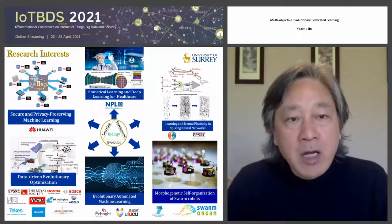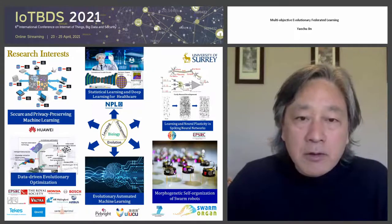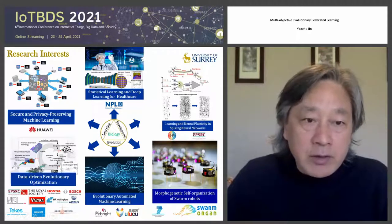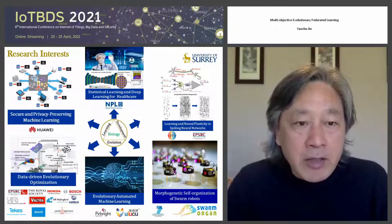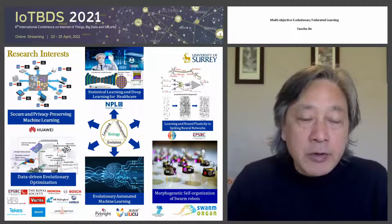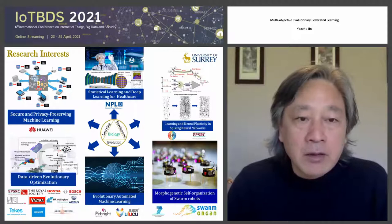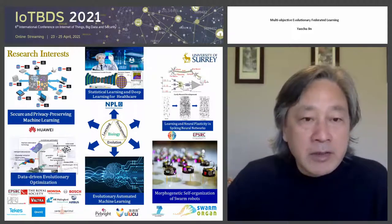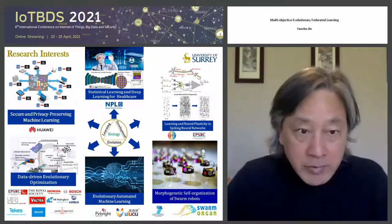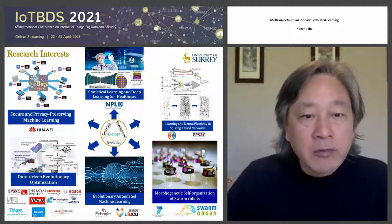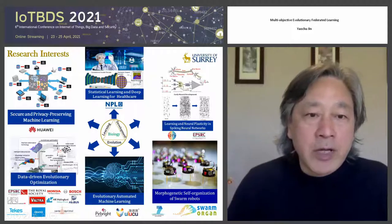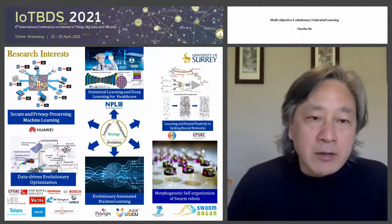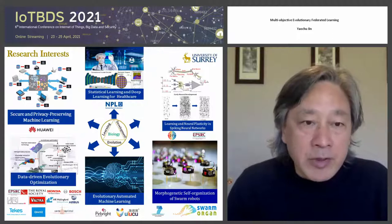One area is evolution. In AI, there is a branch called evolutionary computation, and I have been working on using evolutionary algorithms for solving complex industrial optimization problems. You can see that I have many collaborations with industry, such as Honda, Bosch, and Airbus, where we use evolutionary algorithms for designing complex systems.